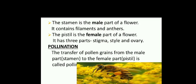The stamen is the male part of a flower, containing filament and anthers. The pistil is the female part, with three parts: stigma, style and ovary. Pollination. The transfer of pollen grains from the male part (stamen) to the female part (pistil) is called pollination. Pollination occurs when pollen grains from the male part of one flower are transferred to the female part of another flower. There are two types of pollination: self-pollination and cross-pollination.